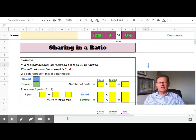We are looking at sharing in a ratio. In this example, in a football season, Marchwood FC took 42 penalties. The ratio of saved to scored is 3 to 4.